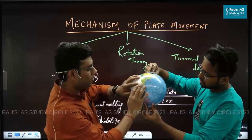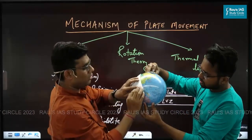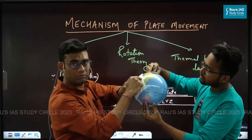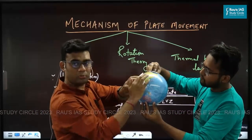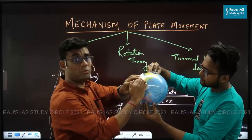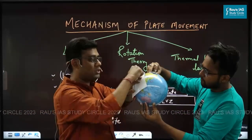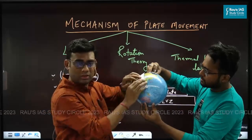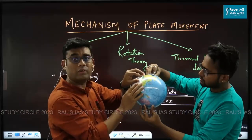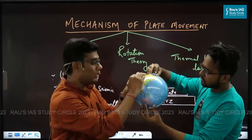Very interesting idea. When the plate is moving like this, I will have circles drawn like this. Now, this point on the plate and this point on the plate — which is farther from the Euler pole? The lower one is farther from the Euler pole. So the circumference of that circle would be more. In the same time, this point on the plate has to move more. So its velocity would be high, while this point's velocity would be less. As these plates move, they move at differential speeds — different parts of the same plate.